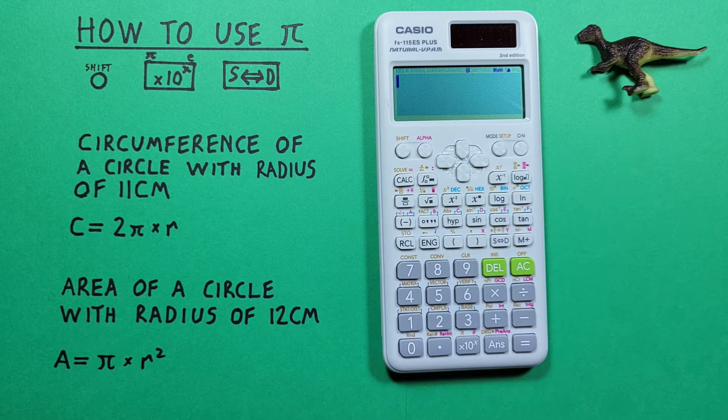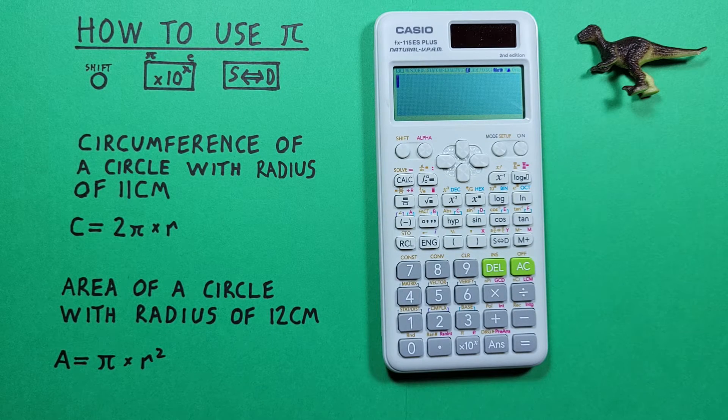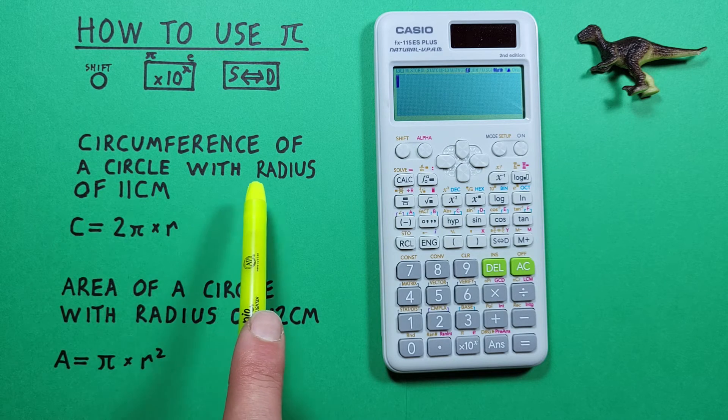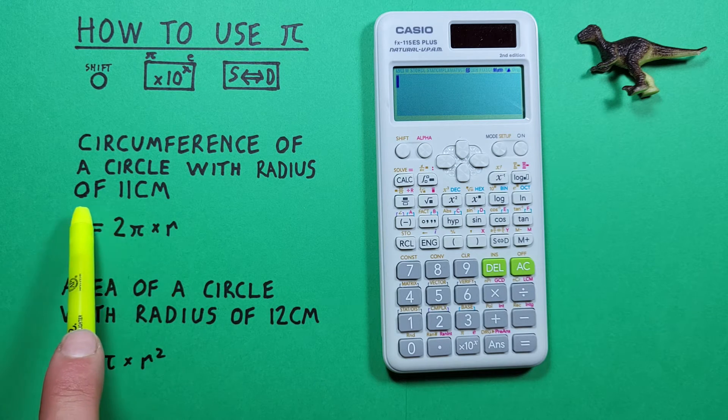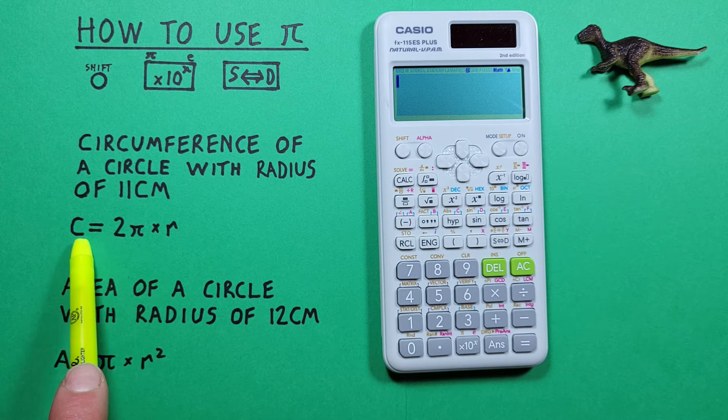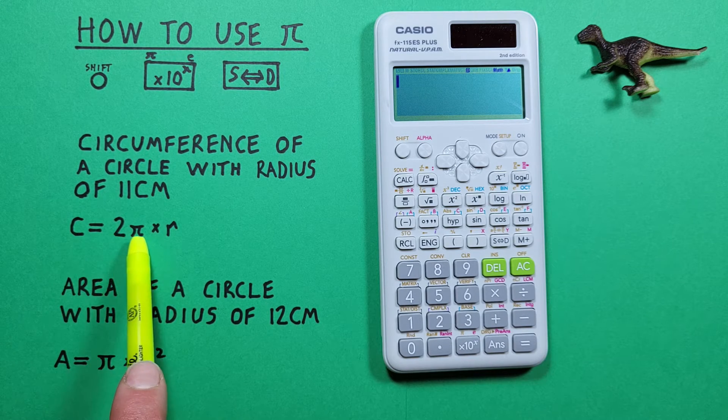Pi is useful in a lot of different calculations. For example, if we want to calculate the circumference of a circle with the radius of 11 centimeters we can use pi and do this formula here: 2 pi times r.